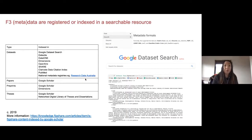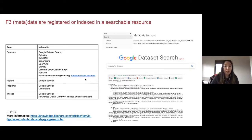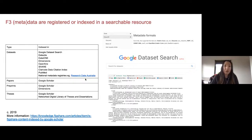If content can be findable within your own repository platform, it should then be findable on other external platforms such as Google — the world's biggest search engine — as well as international search engines used in your own regions and countries. It should be part of a national metadata registry, part of a national or international network, registered in a researchable resource, and on a platform you regularly use to find content.